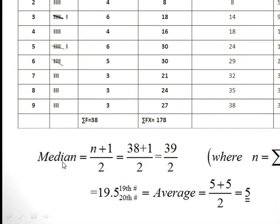From a small set of data we have two methods. Method one is best used with a small set of data, and method two is best used whenever you have a table. Since we have a table here, the median formula is (n + 1) divided by 2, where n is 38.